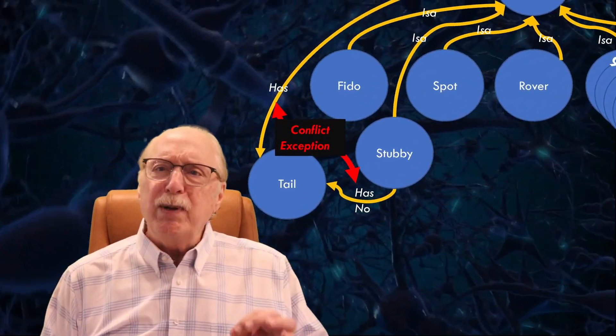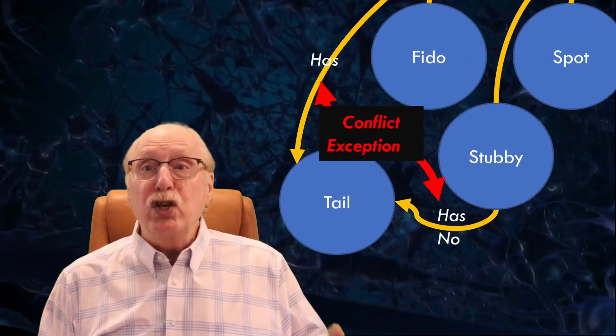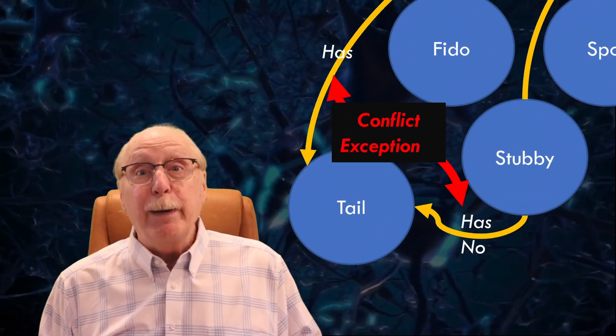But if Stubby is a dog, and dogs have tails, yet Stubby has no tail, the exception overrides just that attribute. He's still furry. This structure enables incredible compression of information, just like the brain needs, and AI does too.